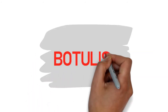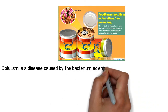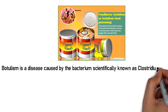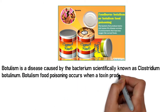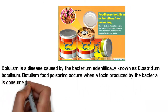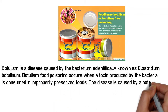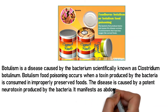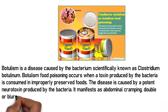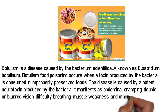Today's topic: botulism. Botulism is a disease caused by the bacterium scientifically known as Clostridium botulinum. Botulism food poisoning occurs when a toxin produced by the bacteria is consumed in improperly preserved foods. The disease is caused by a potent neurotoxin produced by the bacteria, and it manifests as abdominal cramping, double or blurred vision, difficulty breathing, muscle weakness, and other serious symptoms.